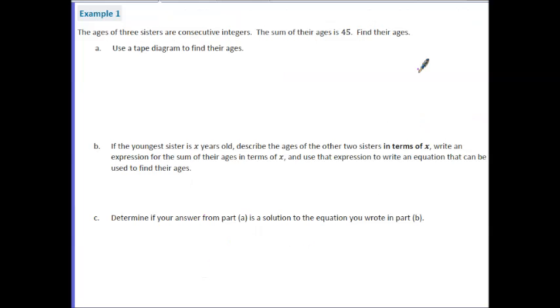So let's look at example one. The ages of three sisters are consecutive integers. The sum of their ages is 45. Find their ages. Now the first thing you need to know, and not all people know this, so let's have a little quick discussion about it. What are consecutive integers? So consecutive integers means we have integers that go in order. So this could be one, two, three, four, and so on. The key to this is that the next number is always one greater than the last.